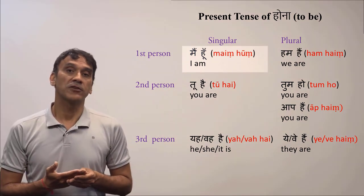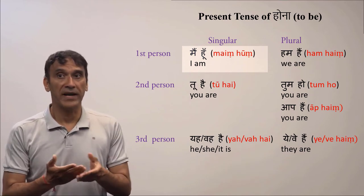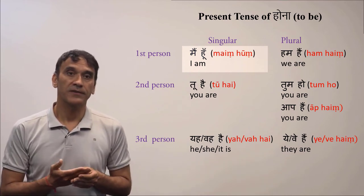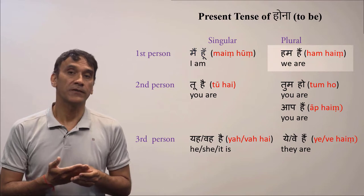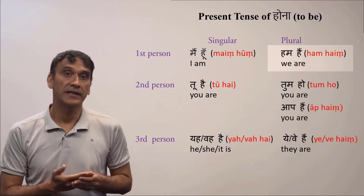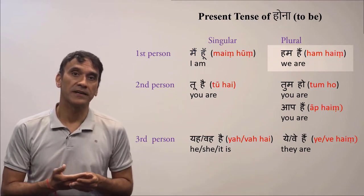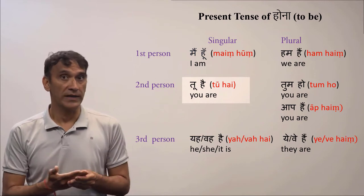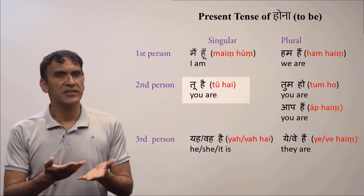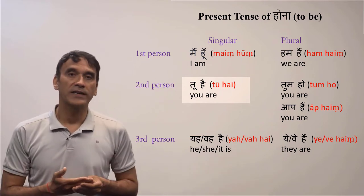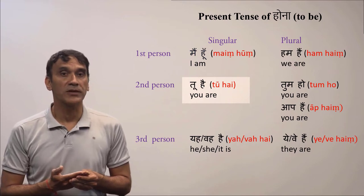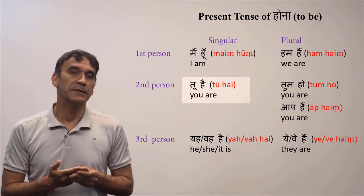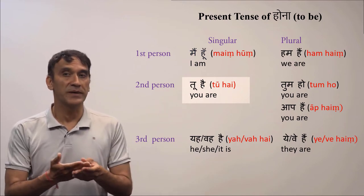The first person singular form is HU, as in MAIN HU, which means 'I am.' For the first person plural, the form is HAIN, as in HUM HAIN, meaning 'we are.' The second person singular form is TU HAI. As mentioned previously, students should avoid this form because it is extremely informal and can be taken as rude behavior.